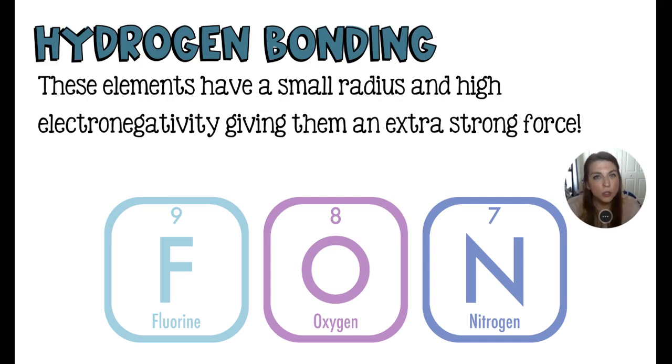The reason these elements are included in the hydrogen bonding umbrella is because they, for their size really, they have a very small radius. They have a crazy high electronegativity, which is going to help them draw in electrons very closely. Again, like I said, increasing the disparity between the positive and negative ends.